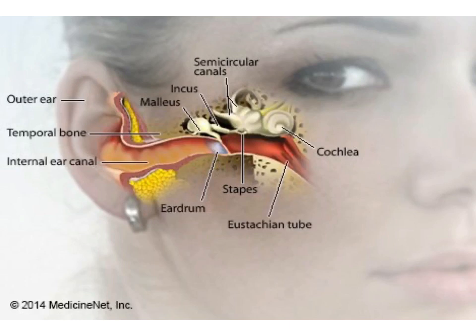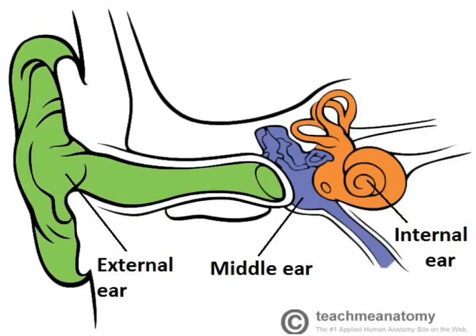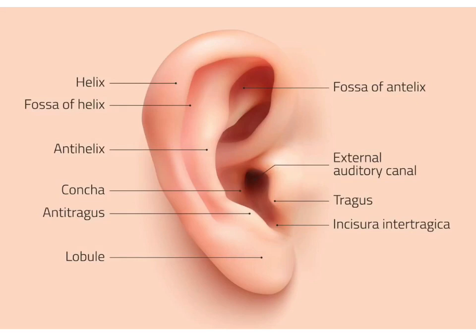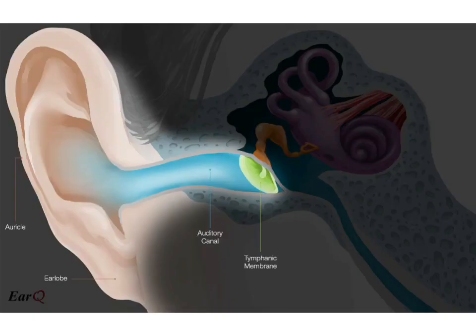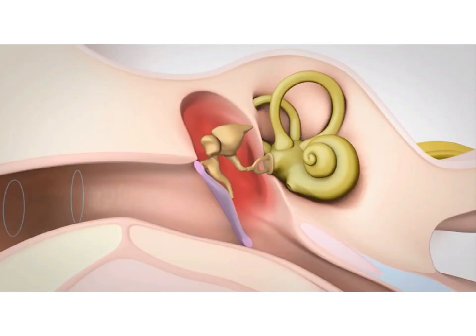The human ear is divided into three parts: outer ear, middle ear, and internal ear. The outer ear consists of pinna, ear canal, and eardrum. The function of the pinna is to collect the sound waves. These sound waves then travel through the ear canal and strike the eardrum.